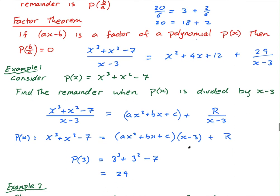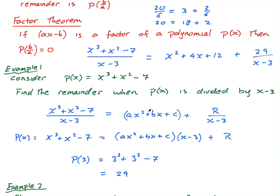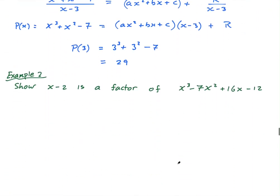So that's the remainder theorem. You can find the remainder by just subbing in b over a when the divisor is in the form ax minus b. That's the first example. Now again, I made that way more complicated than it is, just to kind of show you why it all makes sense. The truth is, this is all you needed to do. And that's all I'm going to do for this.